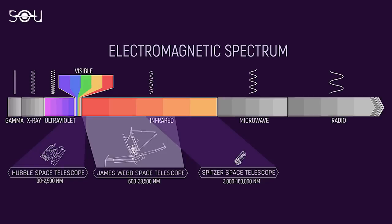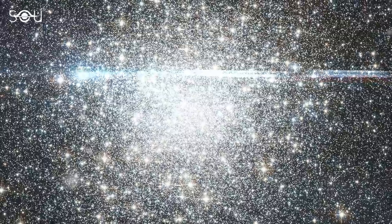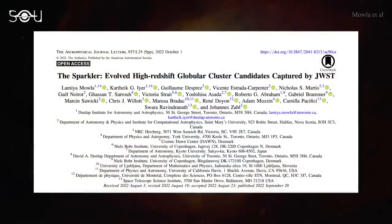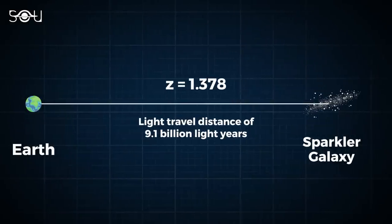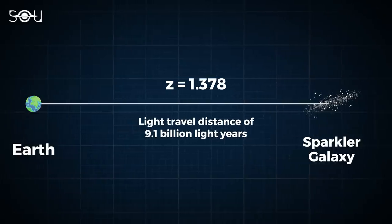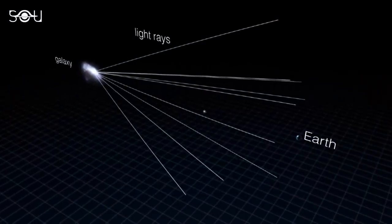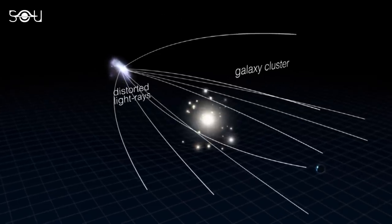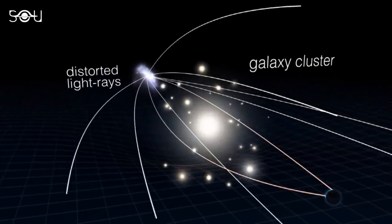Webb can scan down to nano-Jansky flux levels at wavelengths beyond two microns, and thus observe globular cluster formation at high redshifts. In their paper, the researchers used data from Webb's first image to analyze the nature of the point sources seen around a galaxy they fondly named the Sparkler. The galaxy lies at a redshift of 1.378, corresponding to a light travel distance of about 9.1 billion light-years. Sparkler has been gravitationally lensed by the foreground cluster SMACS0723 and strongly magnified by a factor of between 10 to 100.